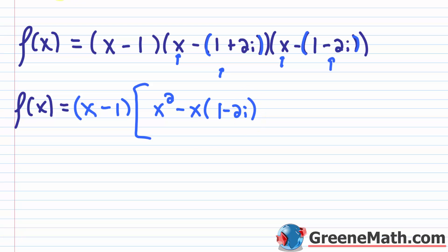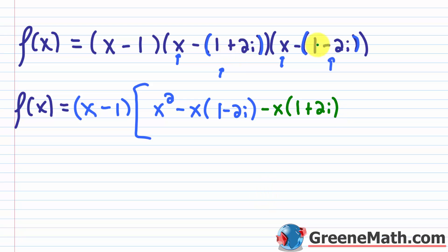The inside terms give negative (1 plus 2i) times x, so minus x times (1 plus 2i). For the last terms, it's negative times negative, so positive, and I have (1 plus 2i)(1 minus 2i). I know the formula: (a plus b)(a minus b) equals a squared minus b squared.